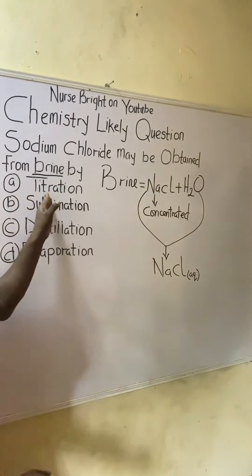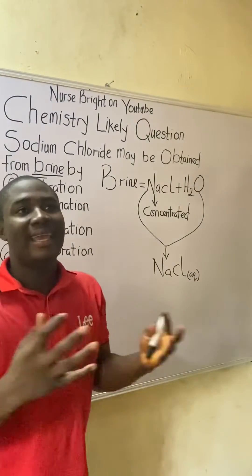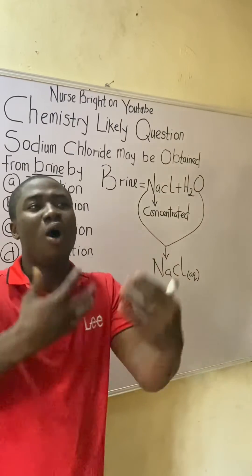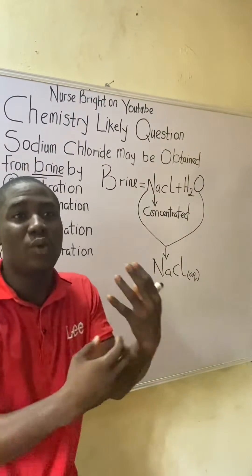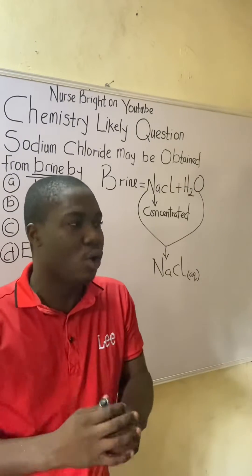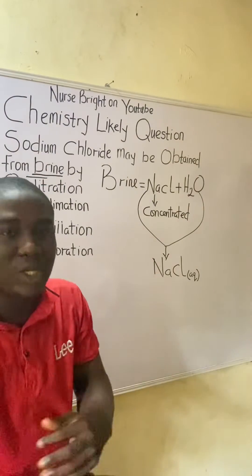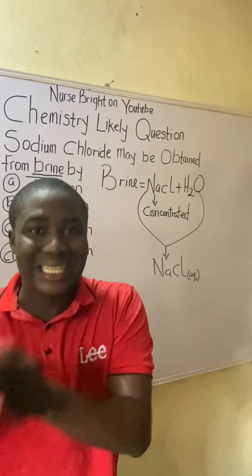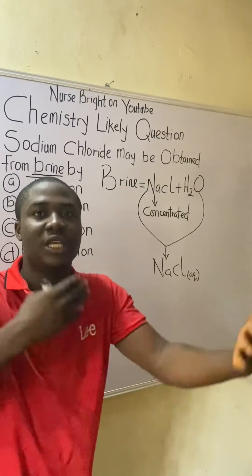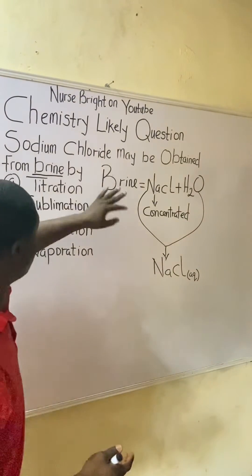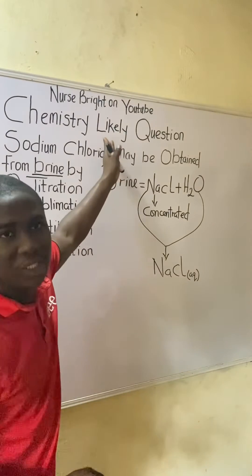Option A is titration. Titration is not the answer because it is not a separation technique — it is a quantitative chemical technique used to determine the concentration of an acid or a base. It involves a neutralization reaction where an acid reacts with a base to form salt and water. So titration is not applicable here.